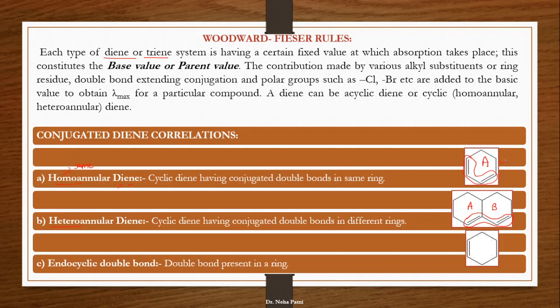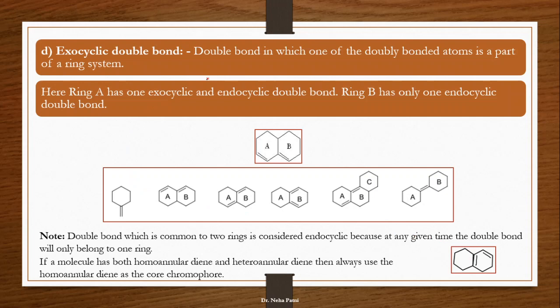So you call it a homoannular diene when a single ring contains both bonds, and heteroannular when two different rings are involved. Then comes the type of bond: if the bond is present inside the ring it is called an endocyclic bond, and if the bond is present outside the ring it is called an exocyclic double bond. Here is an example of an exocyclic double bond — this double bond is outside ring A.